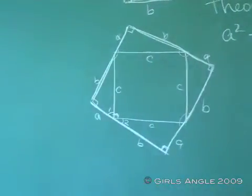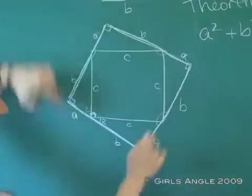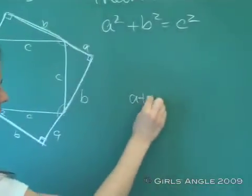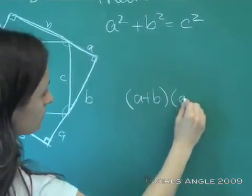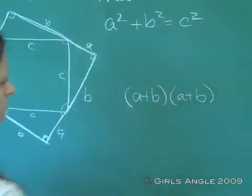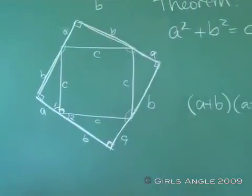All right, well, what is the area of a square? The area of this big square is the side, a plus b, times itself. All right, on the other hand, we can break it into pieces.